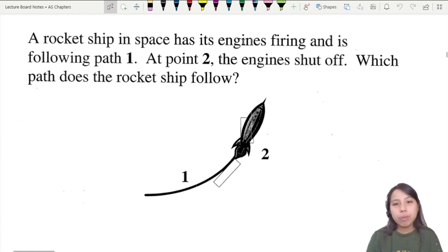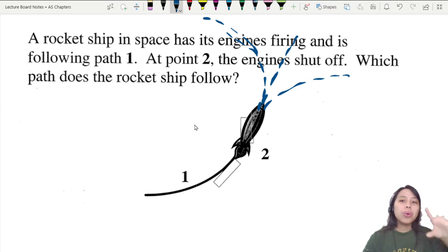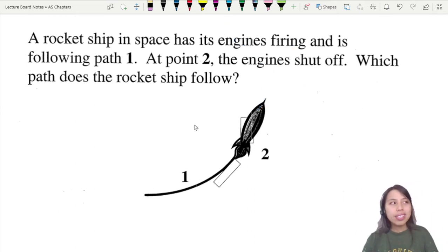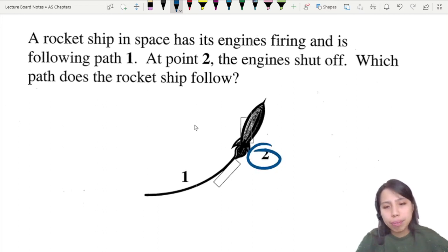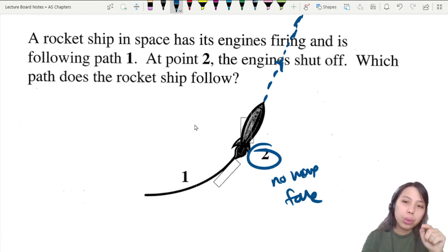So likewise, if you have a rocket ship in space that is firing and traveling in this nice curvy path, suddenly at point two, the engines shut off. What path does a rocket ship follow? I'm going to assume there's no other forces in this universe. How would the rocket ship travel? Think of inertia. An object will keep moving at a constant velocity. So at point two, there's no more force already. If there are no force acting on object, it will just keep moving in a straight line until it hits something or another force acts on it. That is the path where it is on the constant velocity, including the direction.